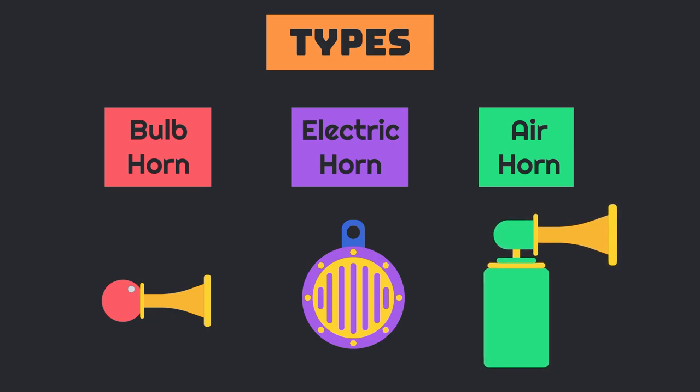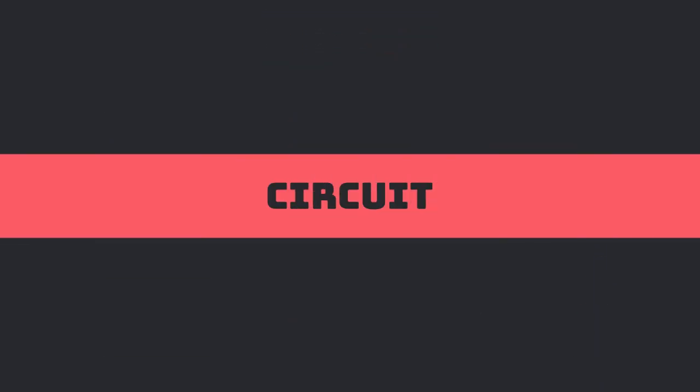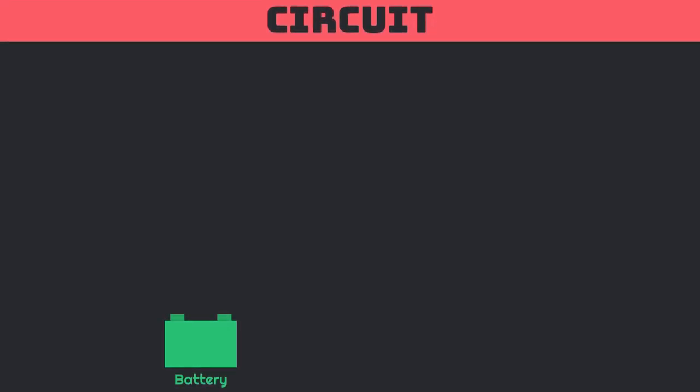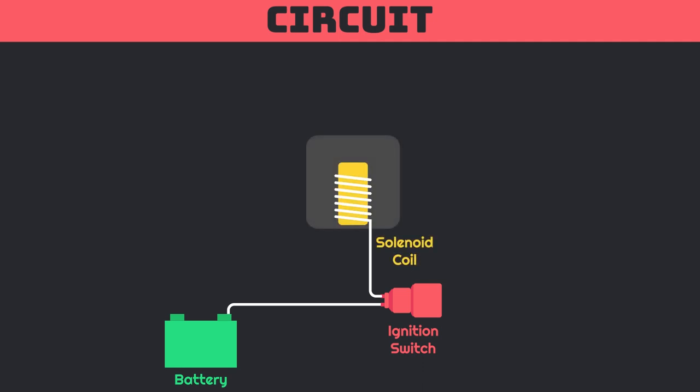If we talk about the general car horn circuit, the connection from battery is directly connected with ignition switch. It advances to the solenoid coil of horn relay and finally reaches the horn switch to close the entire circuit. The negative end of battery and other end of the horn switch will be grounded.